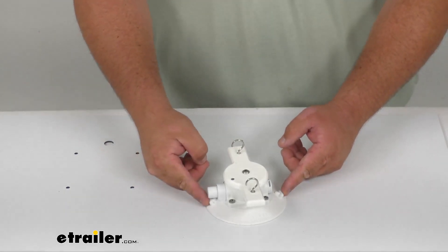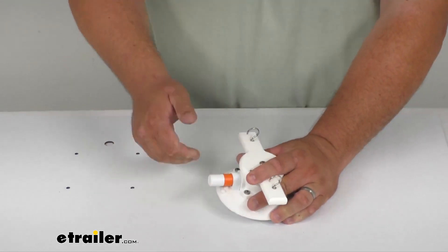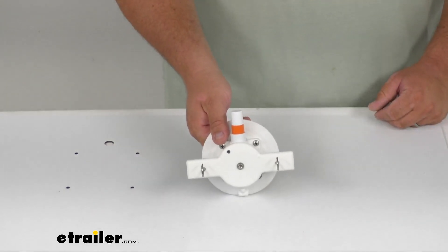You got two tabs here. To release the vacuum, you simply push in, maybe pull up a little bit, and that'll release the vacuum, releasing the product off of the flat, non-porous surface.